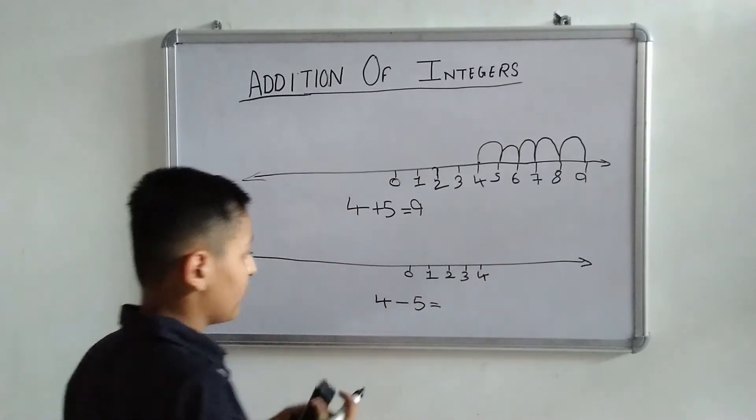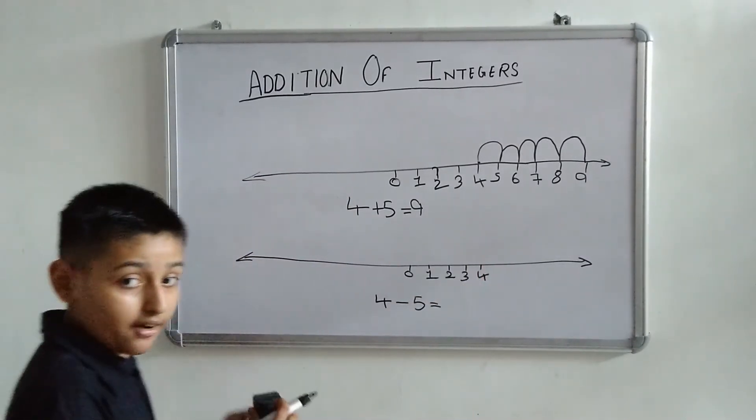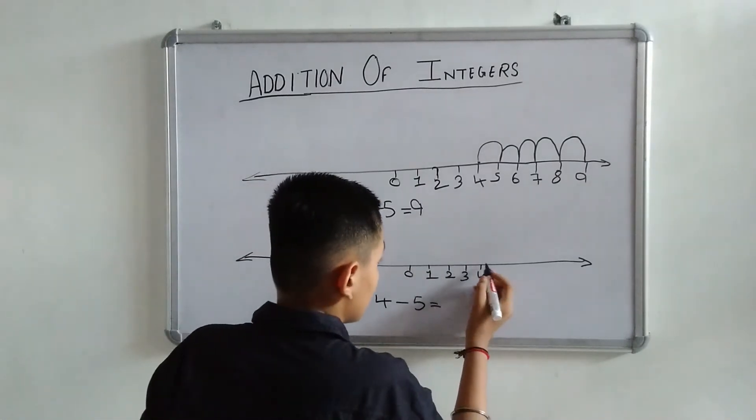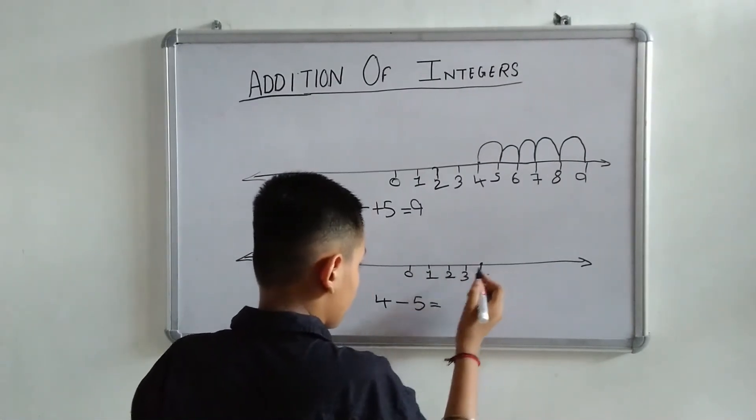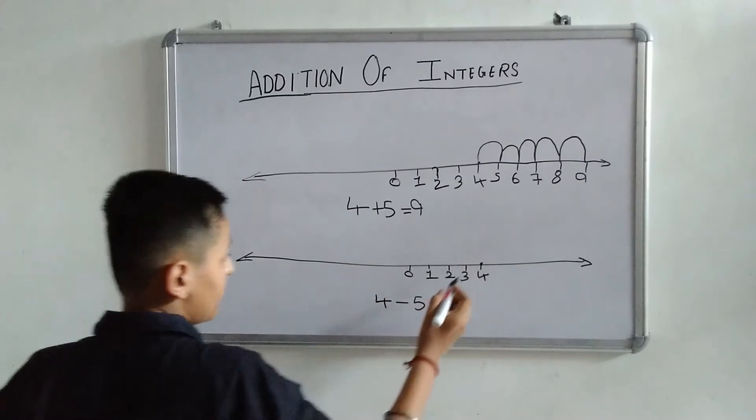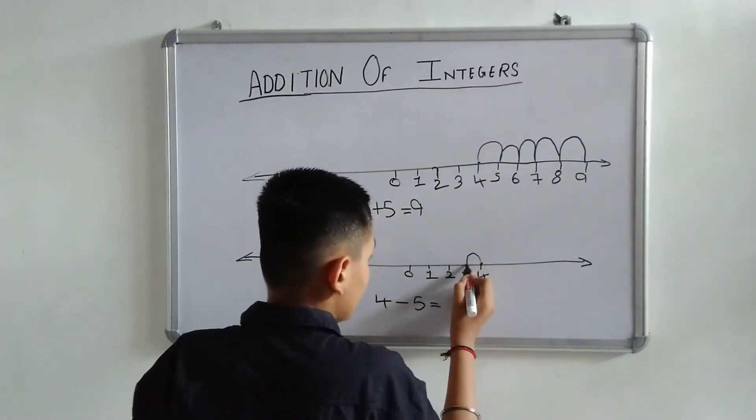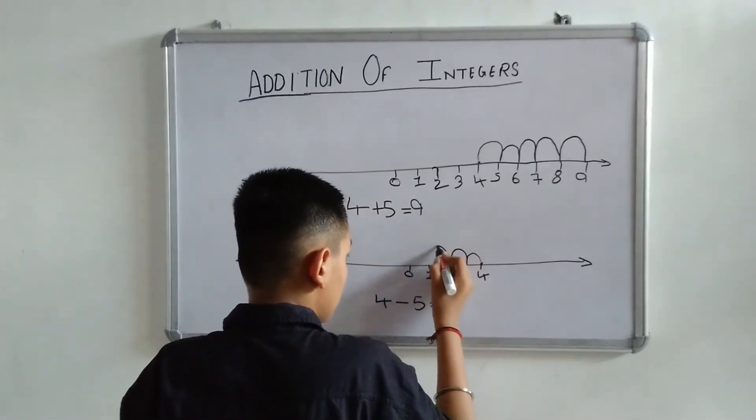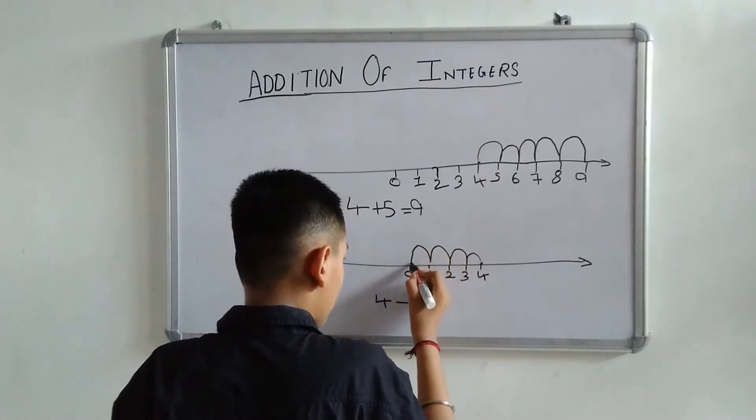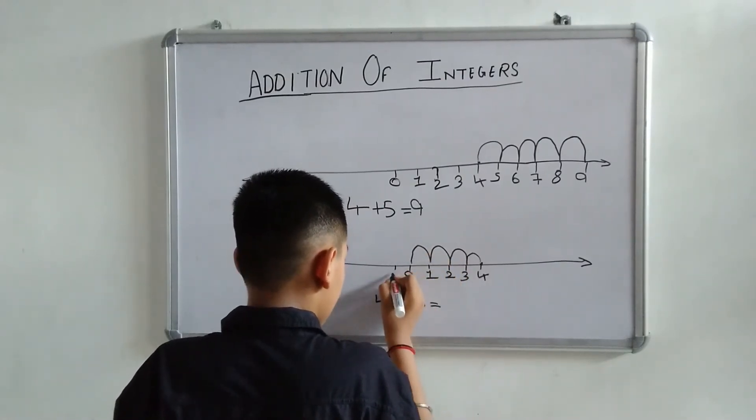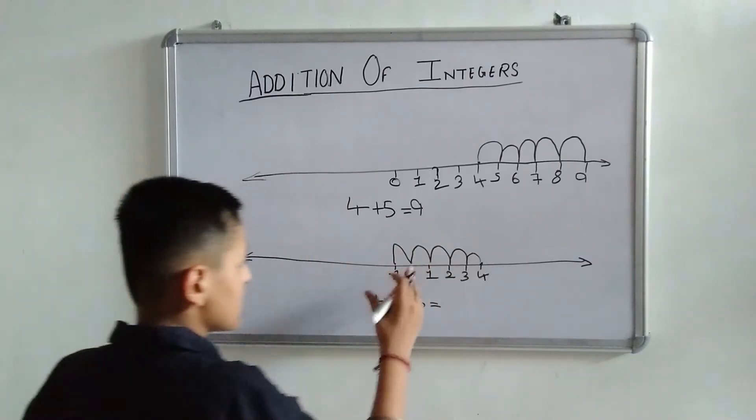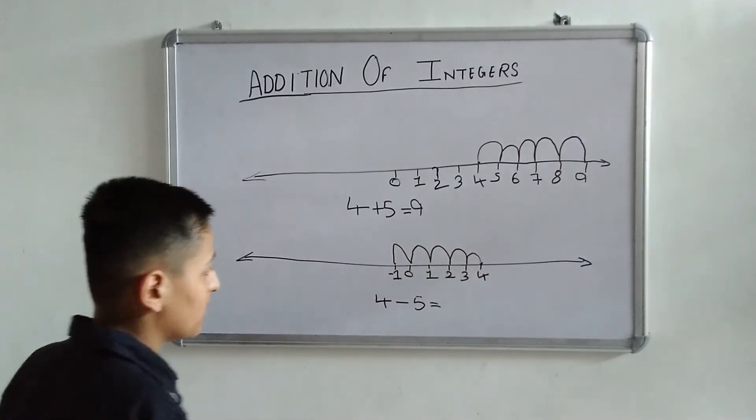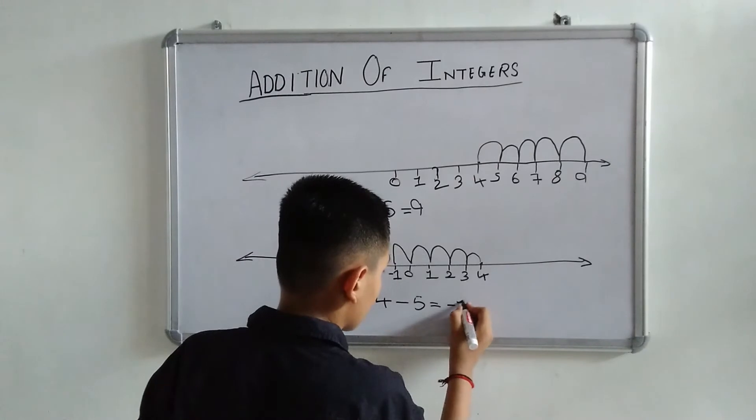This is minus 5. We have to come in left-hand side. Okay friends! This is our point 4. Jump minus 5, means left in left-hand: 1, 2, 3, 4, 5. This is our steps 5. The answer will be minus 1.